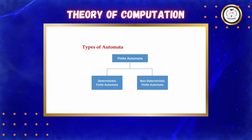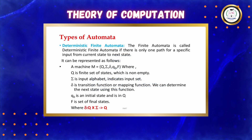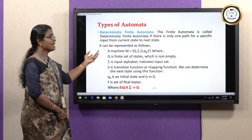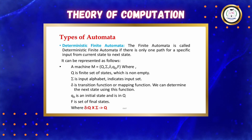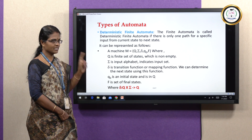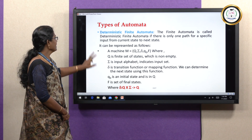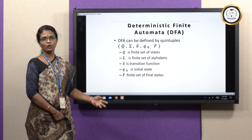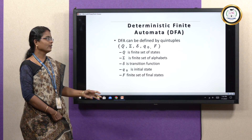The types of automata are two: deterministic finite automata (DFA) and non-deterministic finite automata (NFA). In DFA, the machine accepts the same five tuples as finite automata, but there is only one path from the current state to the next state — it accepts only one input per transition. In NFA, from one state it can accept more than one input, going to multiple possible next states.